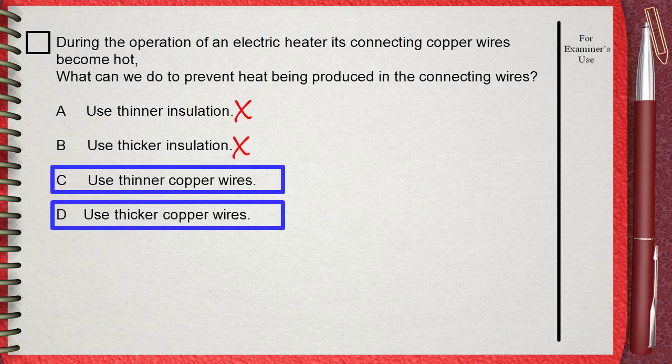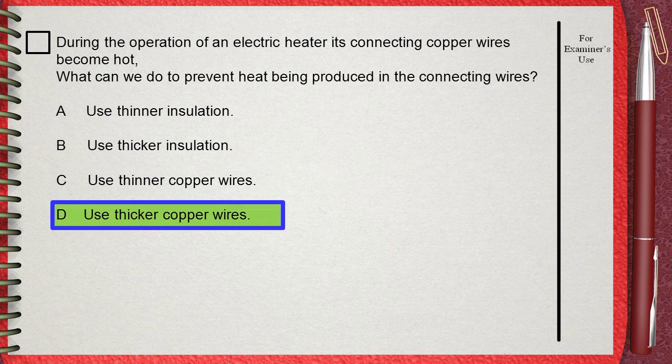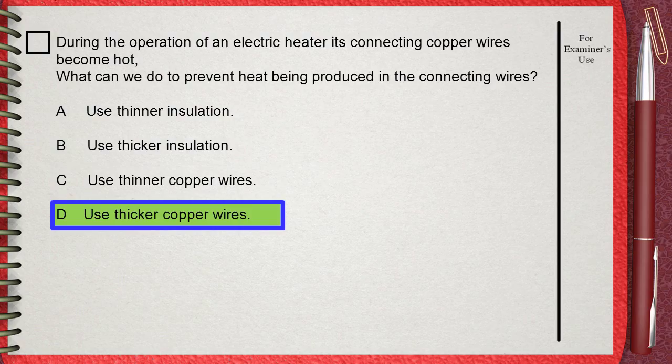In the previous lesson, we said that as the wire becomes thicker, the resistance decreases. This means that our choice will be number D.